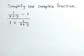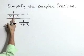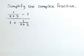Simplify the complex fraction. Here we have the quotient of 1 over x plus 3 minus 1, and 1 plus 1 over x plus 3.